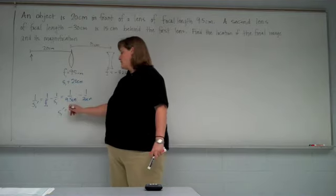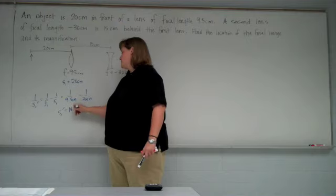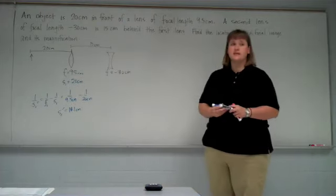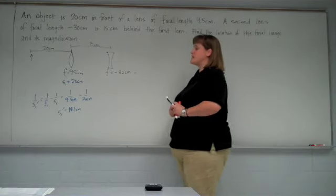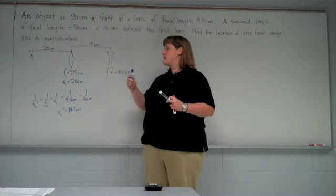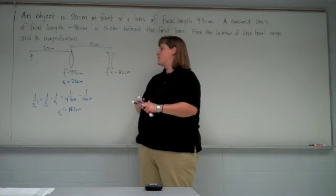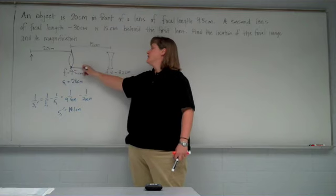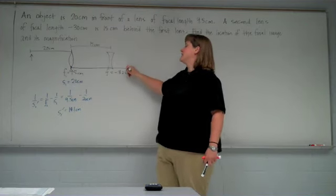18.1 centimeters. We get a positive answer. So that means the image is on the right side of the lens, the back side of the lens. And it's 18.1 centimeters from the lens. So from here to back here, 18.1 centimeters is how far away it is.